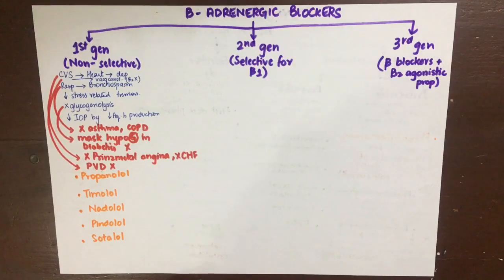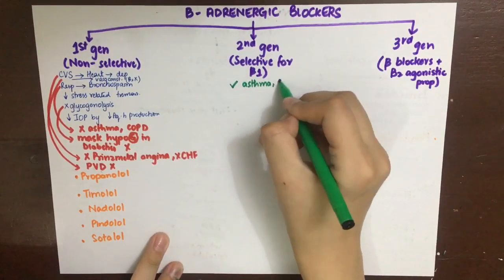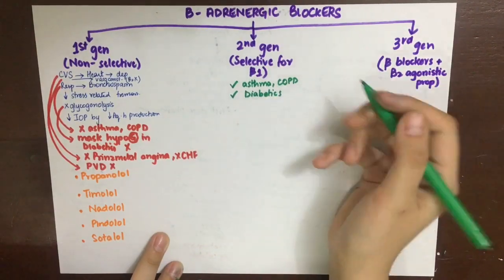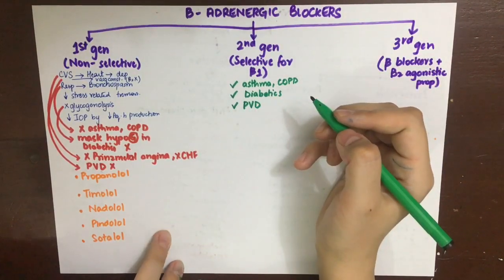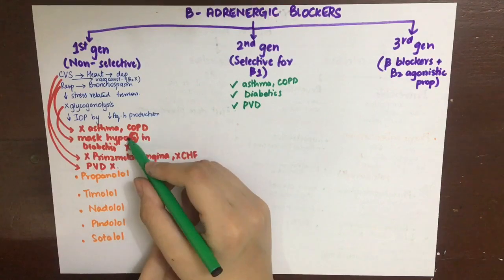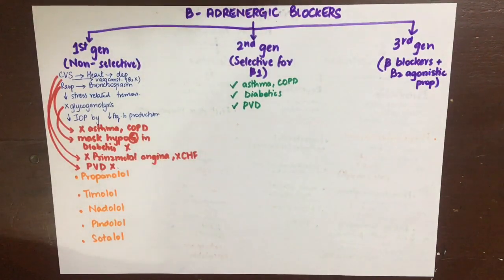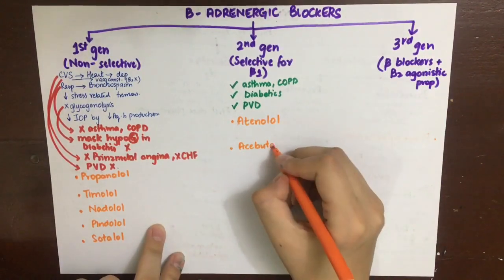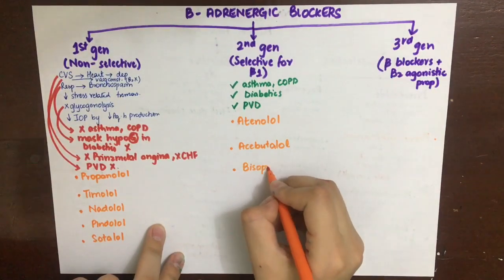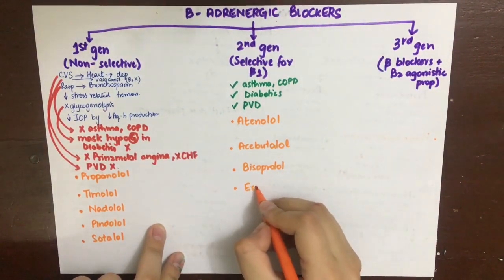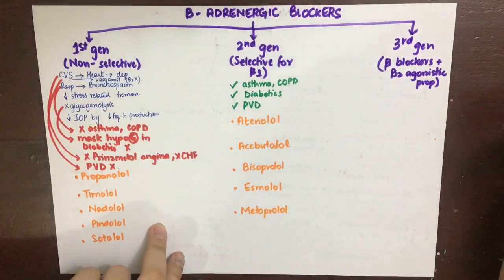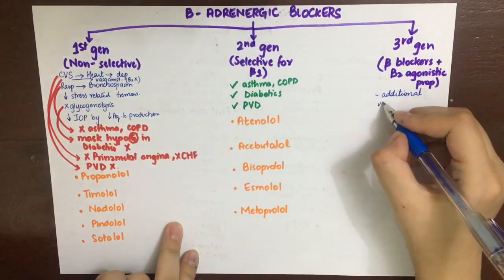Second-generation beta blockers are selective for beta-1 and are also known as cardioselective beta blockers. They are preferred in asthmatics, COPD, diabetics, and peripheral vascular disease patients for the same reasons first-generation drugs are avoided in those cases. Drugs in this class include atenolol, acebutolol, bisoprolol, esmolol, and metoprolol.